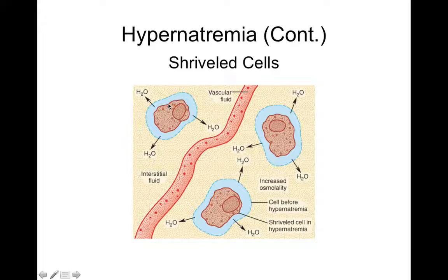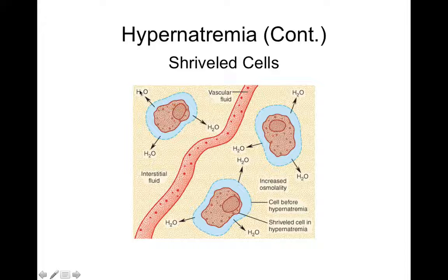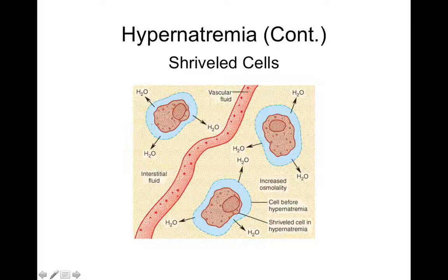Hypernatremia causes cells to shrivel because if you find more sodium outside the cell than inside, water leaves the cell and enters the tissue. If your cells shrivel — like in your brain — your whole brain shrinks, which can help reverse some of the swelling that occurs with intracranial pressure.